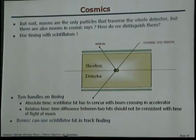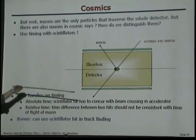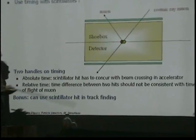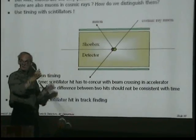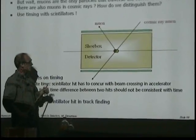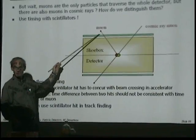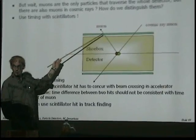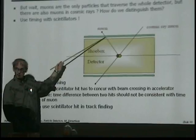They all go over the speed of light. But what you can do is you can use timing — you have two handles on this. First of all, if you produce a real muon, you know at which time the interaction took place. You know how long it takes to go from here to here, which is about 6 meters, so it's a few nanoseconds. So you can measure the absolute time of this muon. That's one.